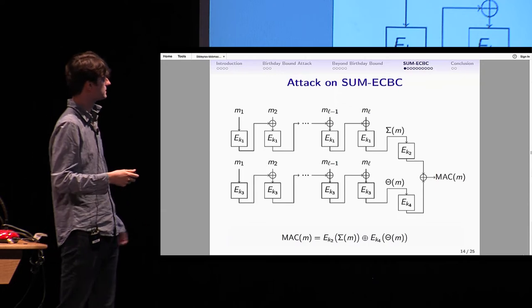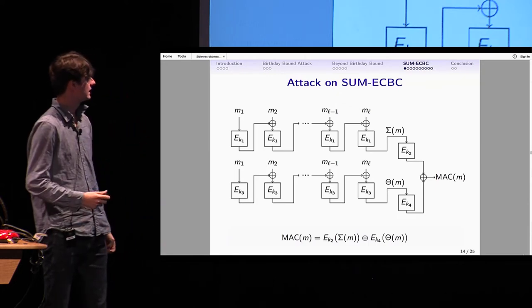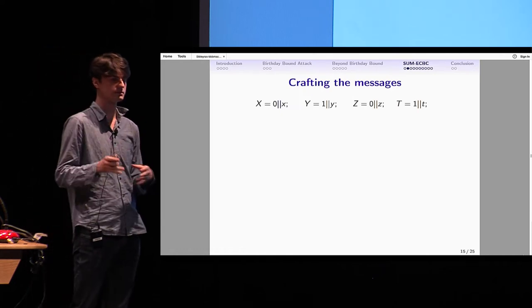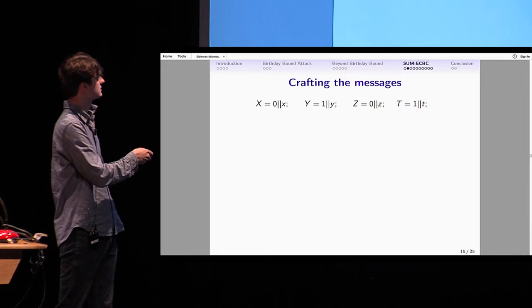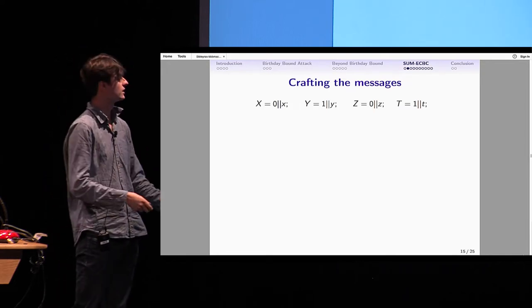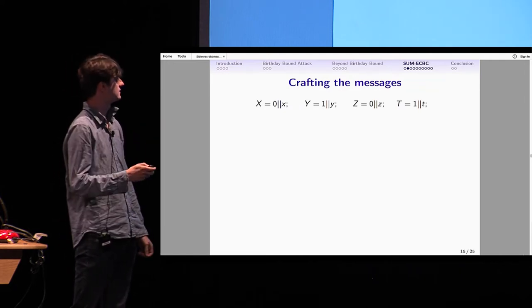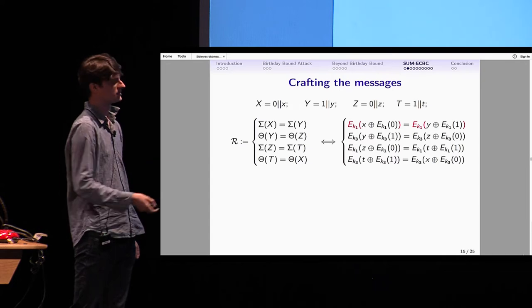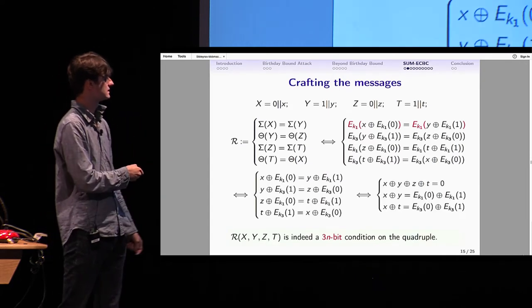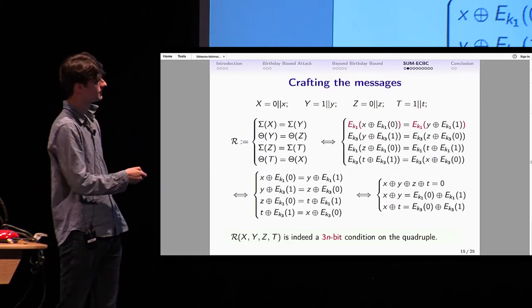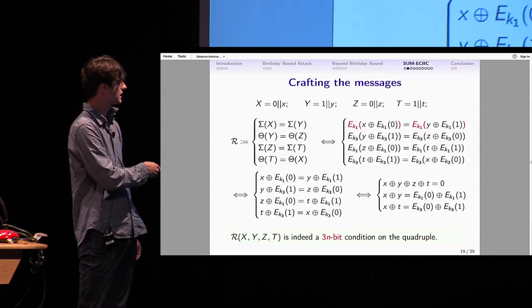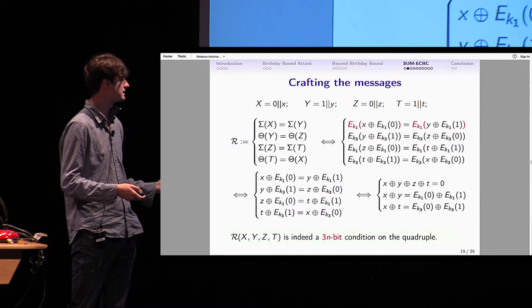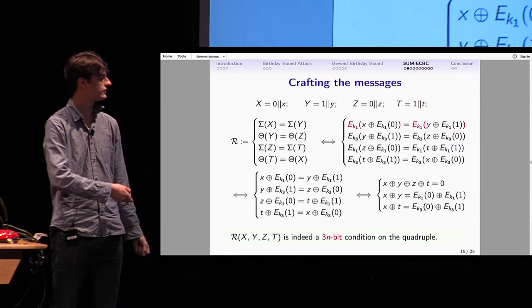That's generic, but maybe you want an example. I'll show you how we actually attack SumECBC with this approach. First, the messages—how do I choose them? I choose two-block messages. X and Z will start with the block of 0. Y and T will start with block of 1. And then a block of any value, respectively X, Y, Z, and T. If I plug this message into the relation R, I just get this. Left and right, I've got the same block cipher, so I can remove it in the equation. Then I get the 3n-bit relation. You immediately see the redundancy: if you sum all the lines, you get that the sum of X, Y, Z, T equals the sum of X, Y, Z, T, which is always true. So you indeed get a 3n-bit relation for R.